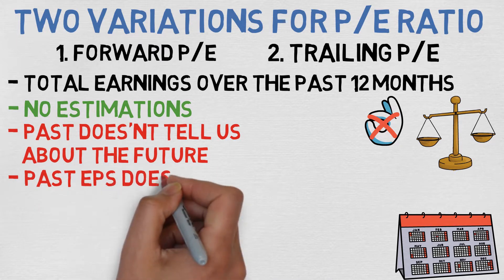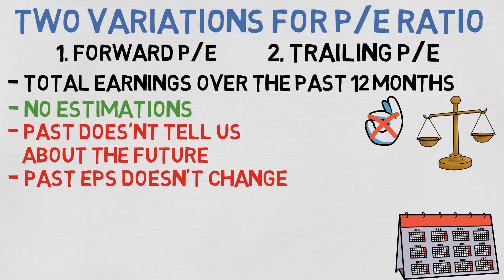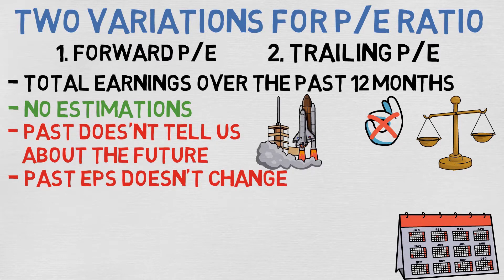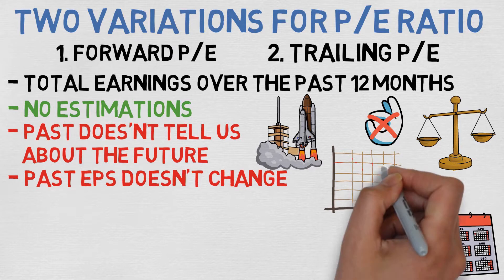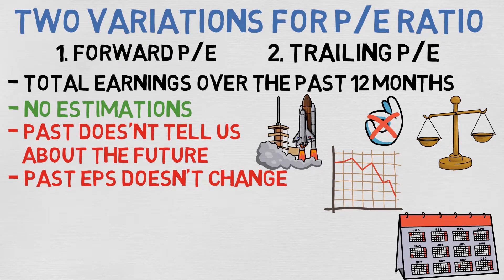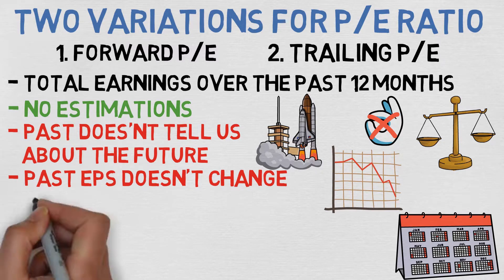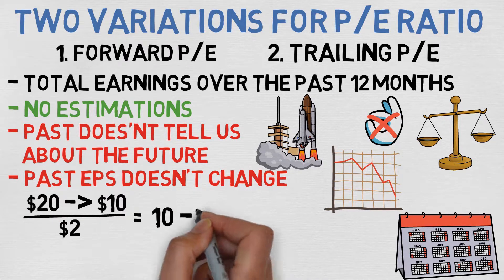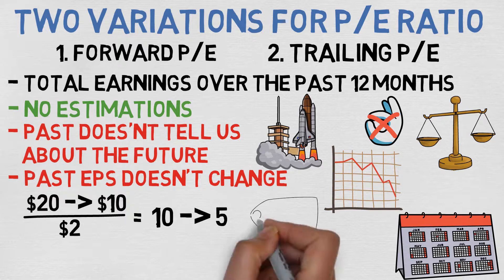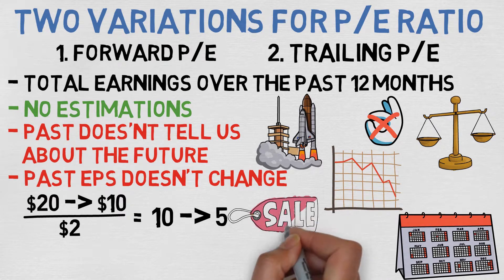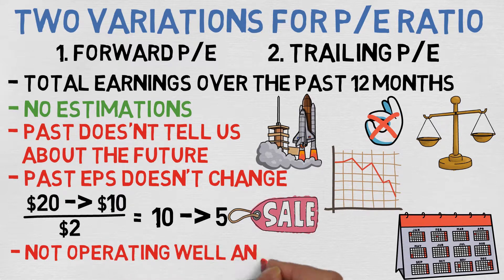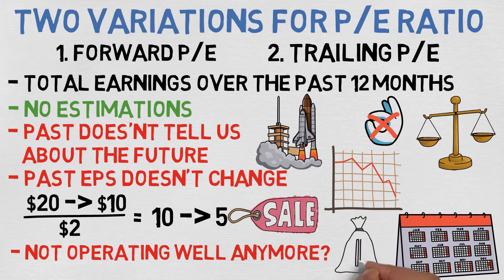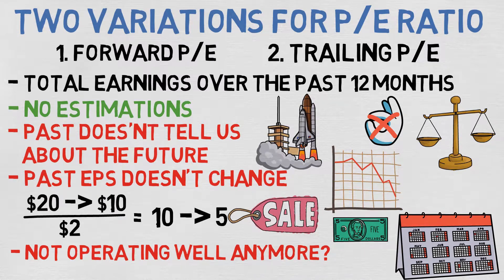While the trailing PE ratio is more objective and based on facts, this doesn't mean it's perfect, because past performance doesn't tell us anything about future performance. The problem with trailing PE is also that the past EPS doesn't change, so if something makes the share price skyrocket or crash, the PE ratio doesn't really reflect that. For example, if EPS is $2 and the price crashes from $20 to $10, the PE ratio goes from 10 to 5. Now it might seem like the company is undervalued, but what if the price crashed because the company is not operating well and future earnings are going to crash too?